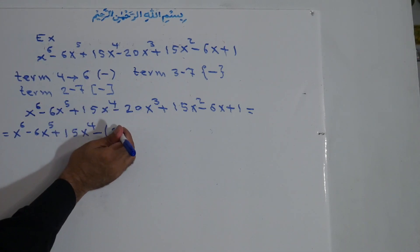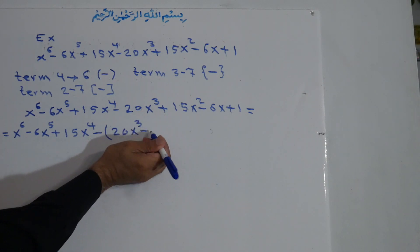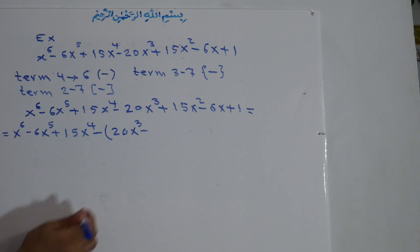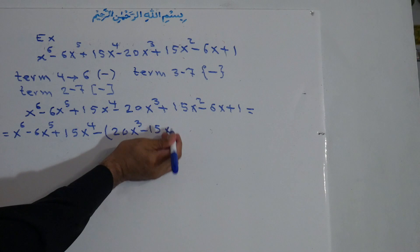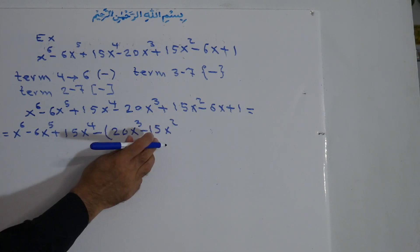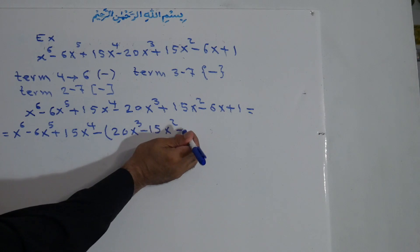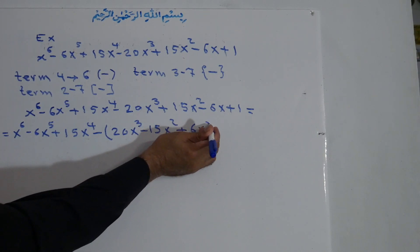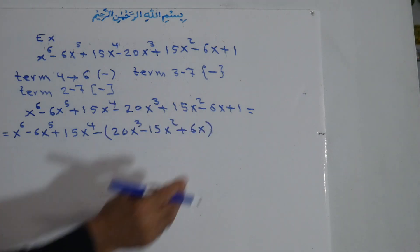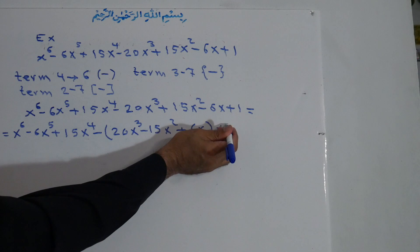The negative 20x to the power of 3 changes to positive 20x to the power of 3, and positive 15x to the power of 2 changes to negative 15x to the power of 2 — that is term 4 and term 5. Then negative 6x changes to positive 6x, closing the small bracket. After the bracket, plus 1 does not change because it is outside the bracket.